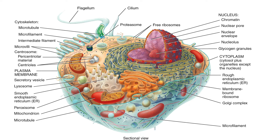And then we have extracellular structures. Extracellular means they are outside the cell — they're not going to be inside. These are going to be structures like microvilli, which are found in some cells but not all, and they play a role in absorption. Cilia is another one found outside the cell — their job is to help move mucus, for example. And the flagellum: there's only one cell in the whole human body that has a flagellum, and that's the sperm cell, so the female body would not have a flagellum.